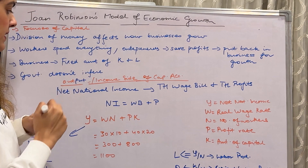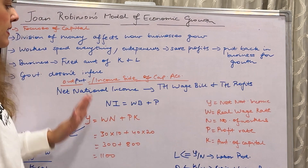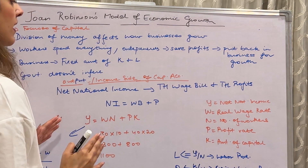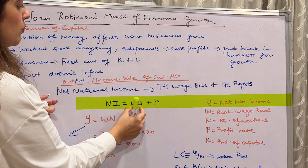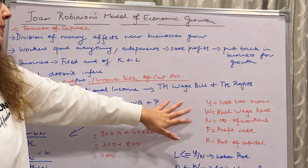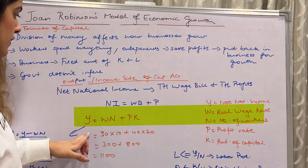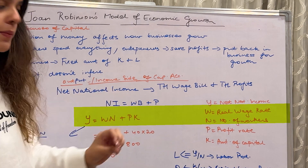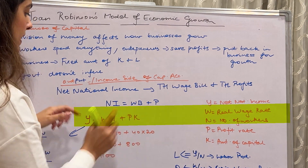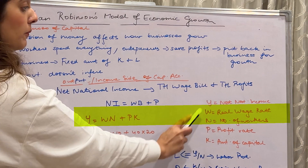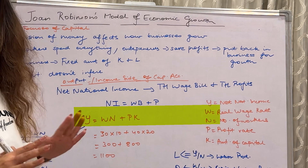Coming to the output-income side of capital accumulation: net national income is divided between the total wage bill and total profits — basically what laborers earn and what entrepreneurs earn. In short: NI = WB + total profits. In economic terms, Y = WN + PK, where Y is net national income, W is real wage rate, N is number of workers, P is profit rate, and K is amount of capital. For example, if W is 30, N is 10, P is 40, and K is 20, multiplying and adding gives total national income of 1,100. The focus of this model is on profits, since profits are what get put back into the business for capital accumulation.